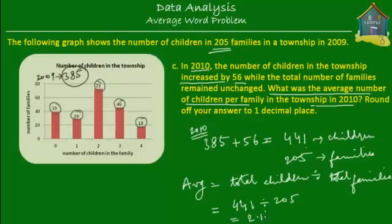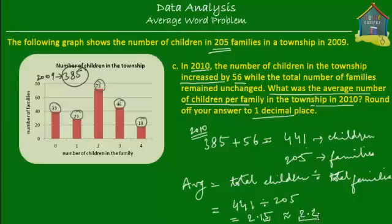So this is equal to 2.15. We still have to round off to one decimal place, so this is approximately equal to 2.2 children per family — we round it up because of the 5. So in 2010, the average number of children per family was approximately 2.2, while in 2009 it was approximately 1.9. In one year, the average number went up by 0.3.